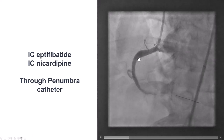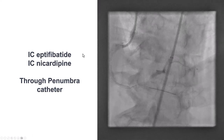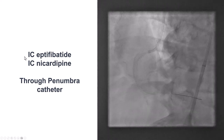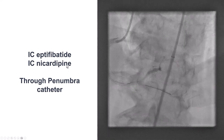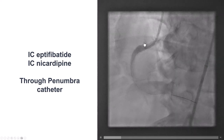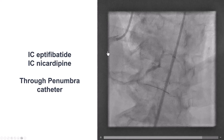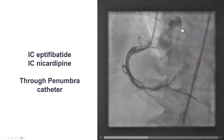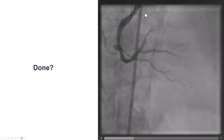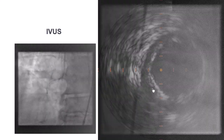To address the slow flow, we gave intracoronary antiplatelet agents — specifically intracoronary eptifibatide — and also intracoronary nicardipine. We delivered these using the Penumbra catheter to optimize delivery inside the right coronary artery and minimize backflow into the aorta. Fortunately, after doing that, there was restoration of TIMI 3 flow into the right coronary artery.